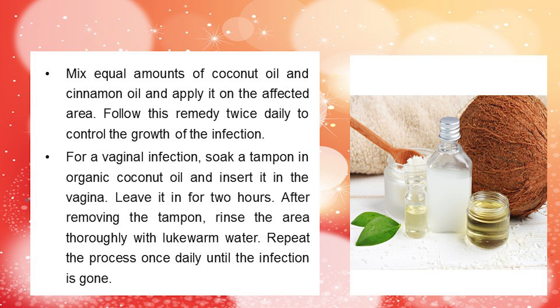Follow this remedy twice daily to control the growth of the infection. For a vaginal infection, soak a tampon in organic coconut oil and insert it in the vagina. Leave it in for 2 hours. After removing the tampon, rinse the area thoroughly with lukewarm water. Repeat the process once daily until the infection is gone.